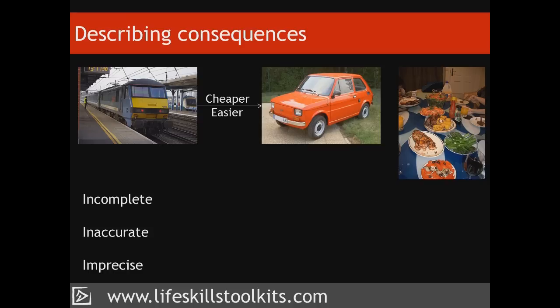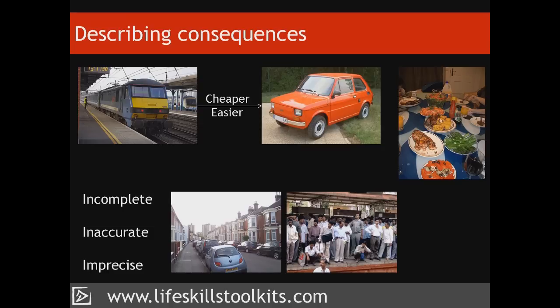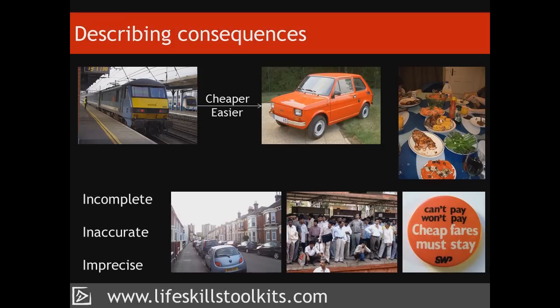Her information is incomplete because she hasn't described what a train journey versus a car journey would involve — perhaps she forgot to mention she has nowhere for you to park. She's being inaccurate by saying everyone finds the train easier: how does your situation compare, and who is everyone? She's also being imprecise by saying a train journey would be cheaper — how cheap exactly, and how was she able to make that comparison? So when defining your consequences, you must ensure they are as complete, accurate, and precise as you can make them.